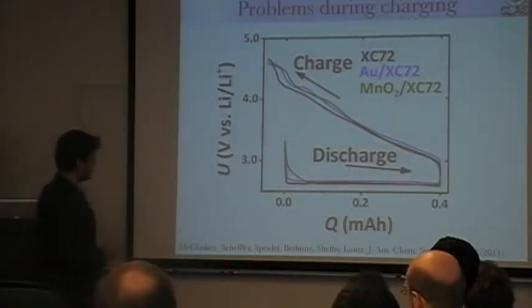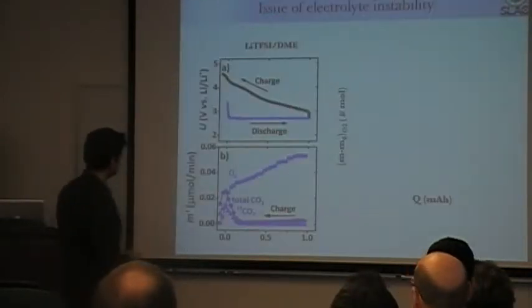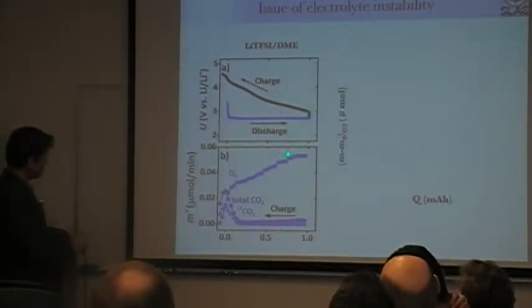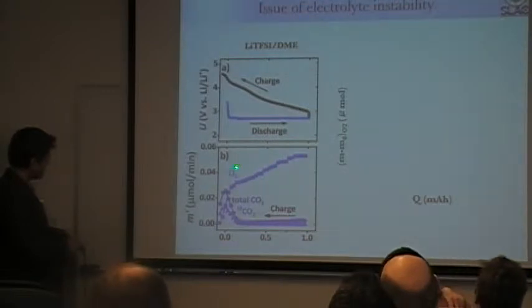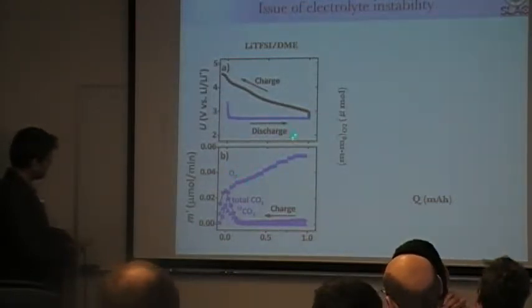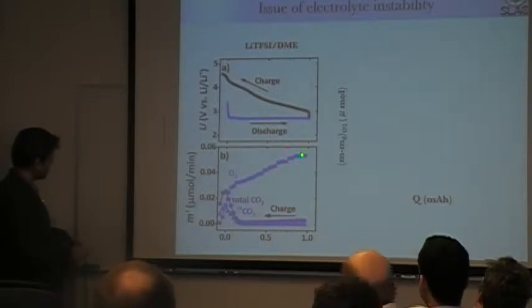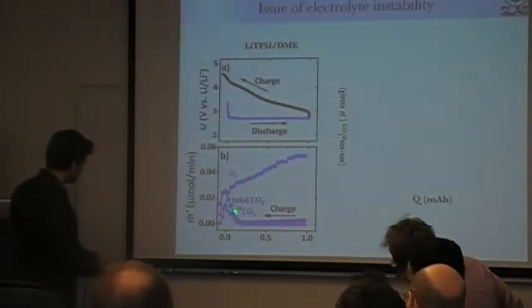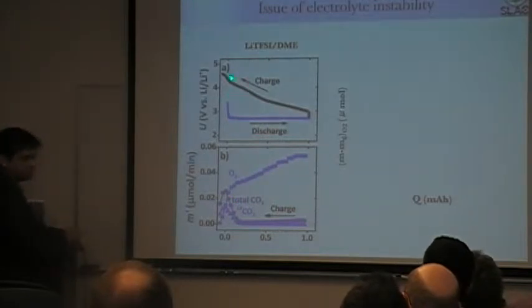So here's the story we put together based on the following observations. These are again DEMS measurements where our collaborators measured the gases coming out when you charge this battery. So initially you get out oxygen, but then finally we get out a small amount of CO2.